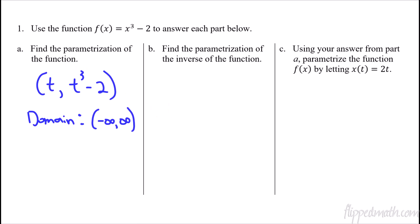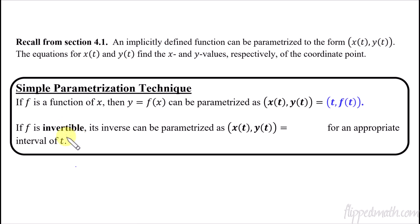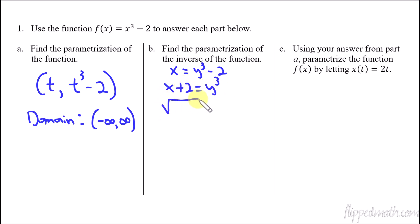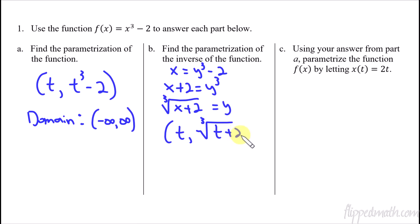Now let's talk about what happens if f is invertible — meaning you can take the inverse. To find the inverse of y equals x cubed minus 2, I swap x and y: x equals y cubed minus 2, giving x plus 2 equals y cubed, so y equals the cube root of x plus 2. The parametrization of this inverse would be t comma cube root of t plus 2.